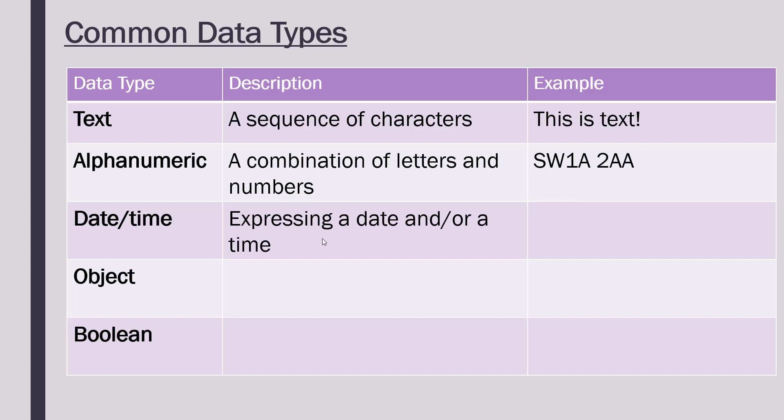A date time data type is expressing, as you'd expect, a date and or a time. Sometimes it can be just a date written in different formats. The Americans put the month before the day; it could have a dot instead of a slash. We can also attach a time to it in either 24 hour clock or 12 hour clock. So it can be a combination, but essentially we're expressing either a date or a time.